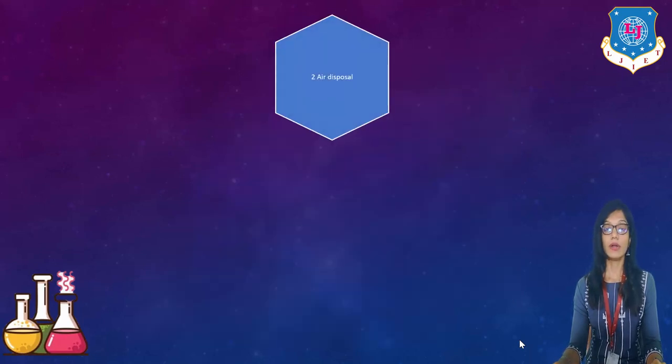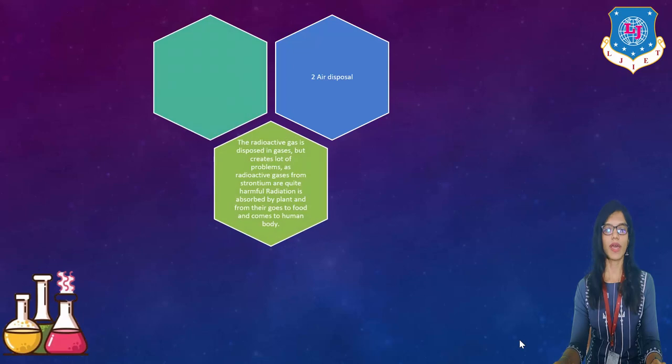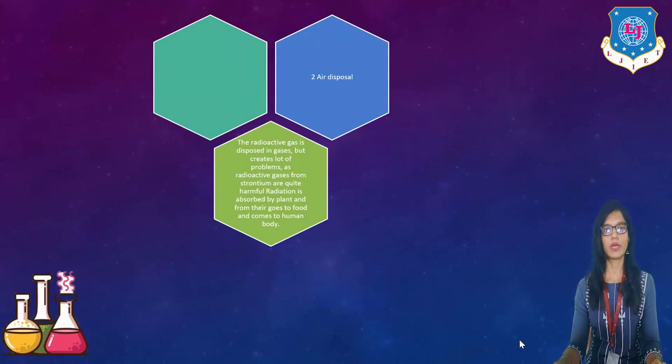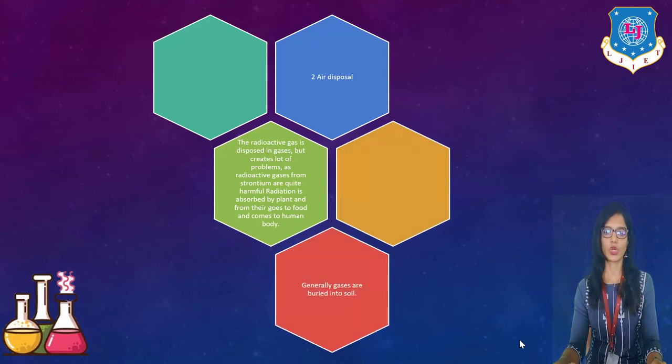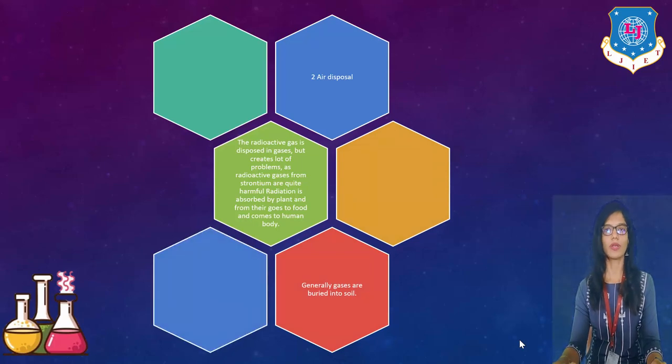Our second one is air disposal. So if we talk about air disposal, the radioactive gas is disposed in gases but creates lot of problems. As radioactive gases from strontium are quite harmful and the radiation is absorbed by plants. From there goes to food and comes to human body very easily. As I said you it will come into cycle and it will create such kind of problem. Generally gases are buried in the soil. So at the last way you have to bury it in the soil.